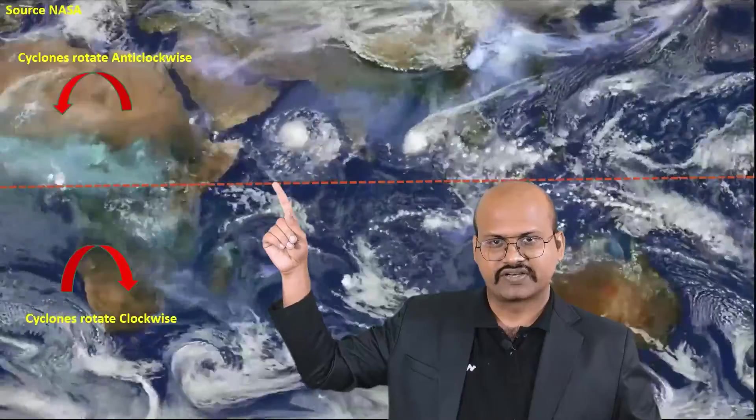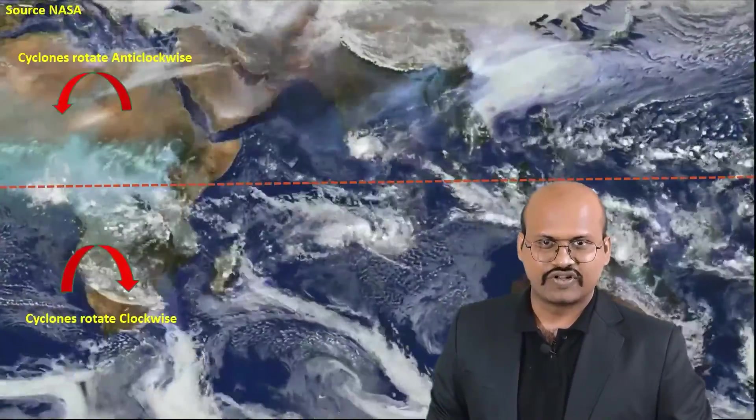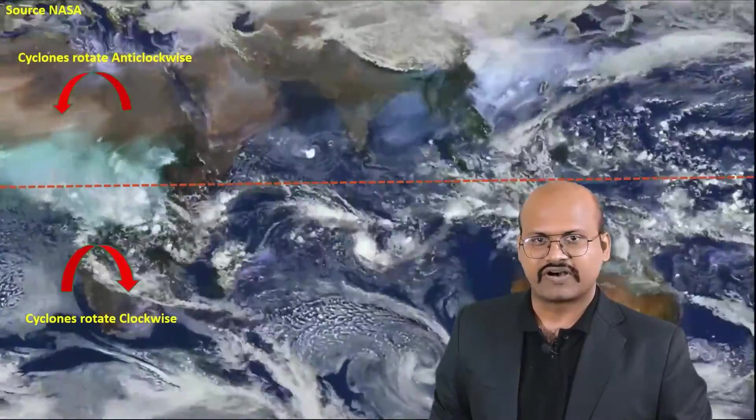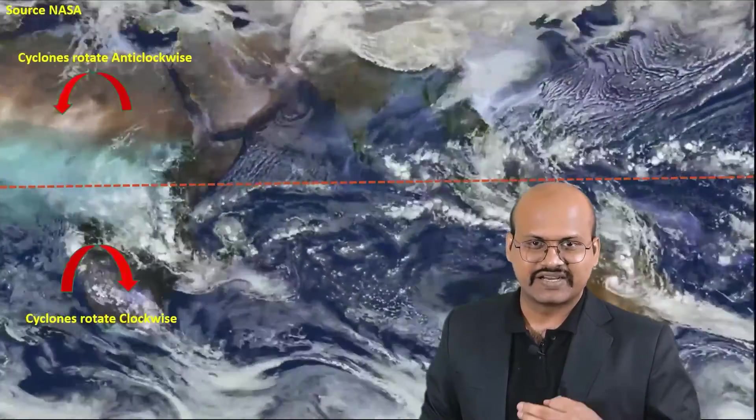This video shows the equator as a reference. North of the equator, cyclones are generated and move in an anticlockwise direction, while south of the equator cyclones move in a clockwise direction. You can observe cyclones on both sides and verify how Coriolis force affects their rotation based on their hemisphere. Just by a margin of a few hundred kilometers from the equator, the rotation direction of the wind in cyclones changes.